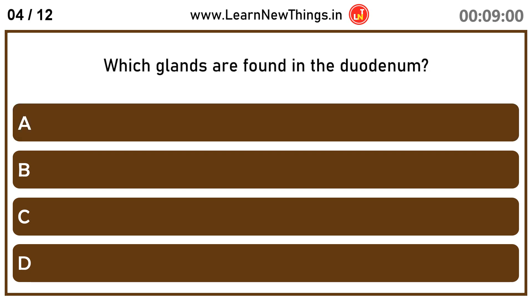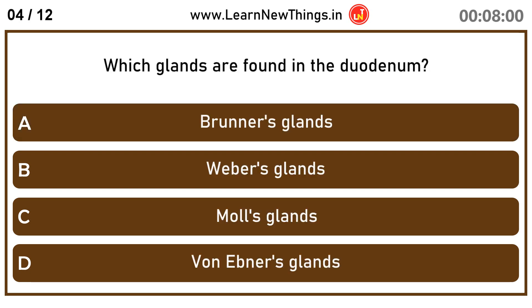Which glands are found in the duodenum? Brunner's glands.